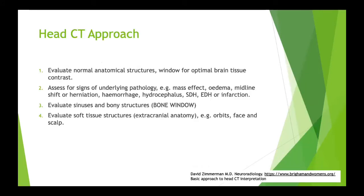Similar to having an approach for chest X-rays, CT scans are no different. Start by assessing normal anatomical structures in the optimal window setting for the tissue you're assessing. Once you've looked at normal structures, focus on underlying pathology - in trauma this is often very obvious, the massive extradural or subdural will jump out at you. Then change to bone windows to look for fractures, including fracture lines running through air sinuses, and assess the base of skull carefully distinguishing suture lines, normal foramina, and actual fractures.